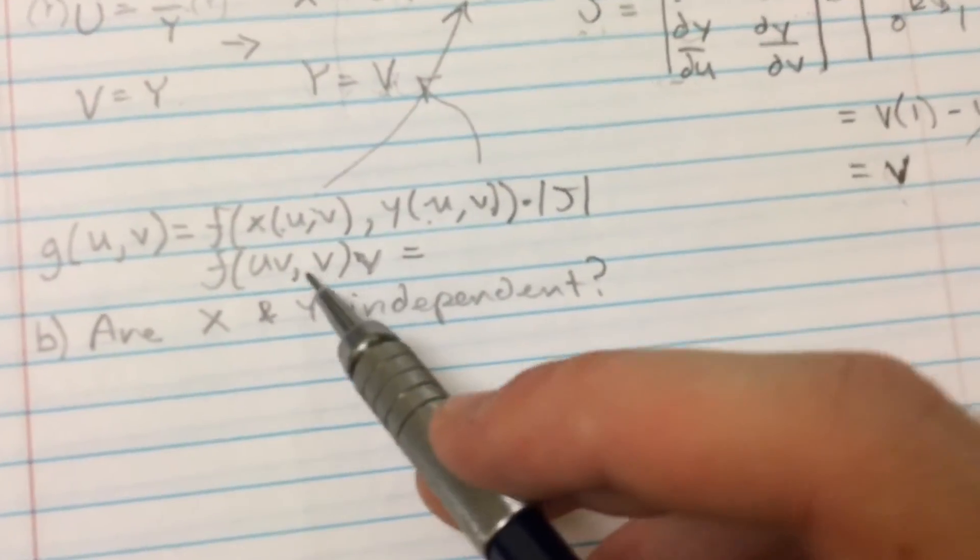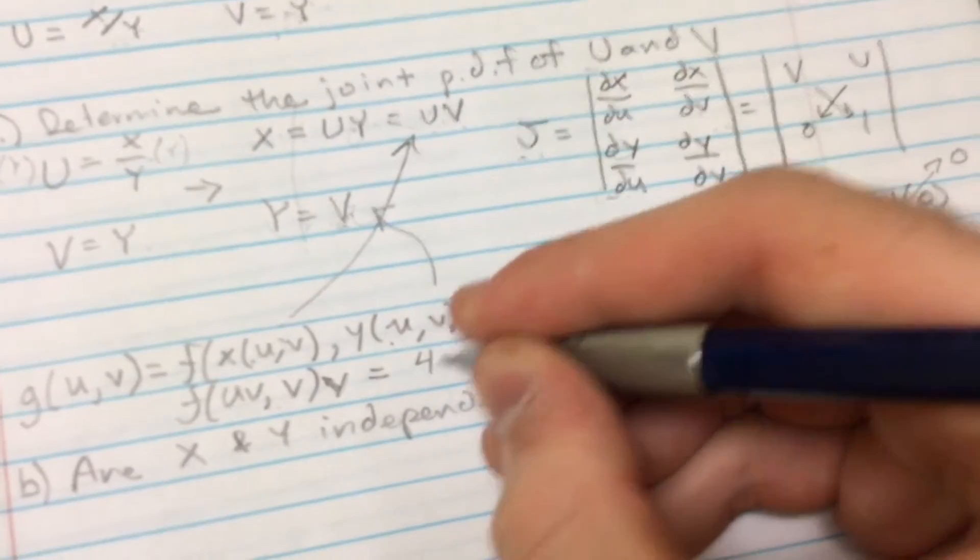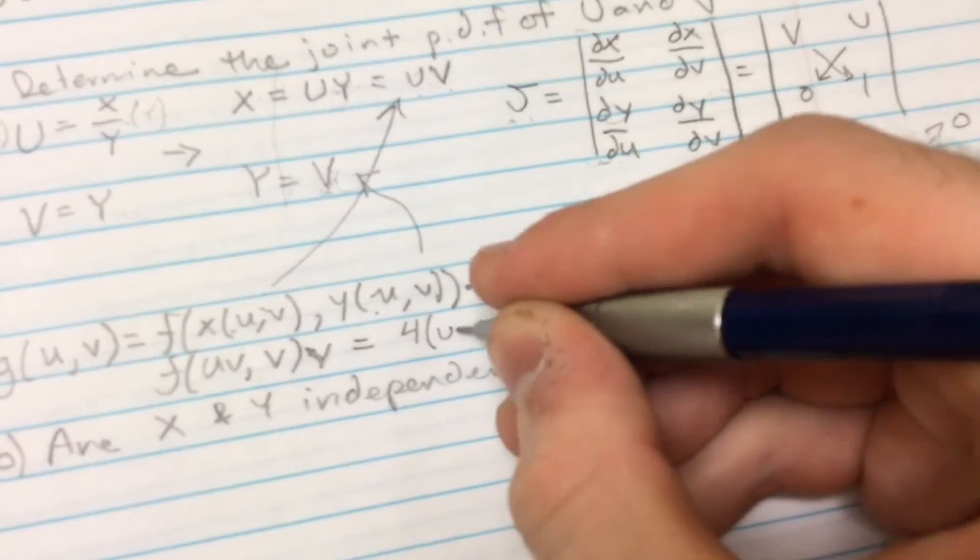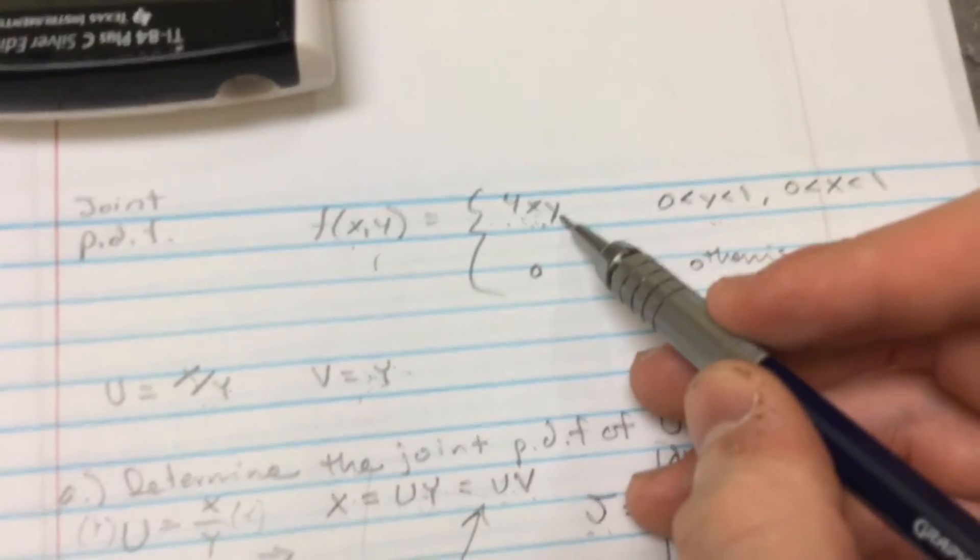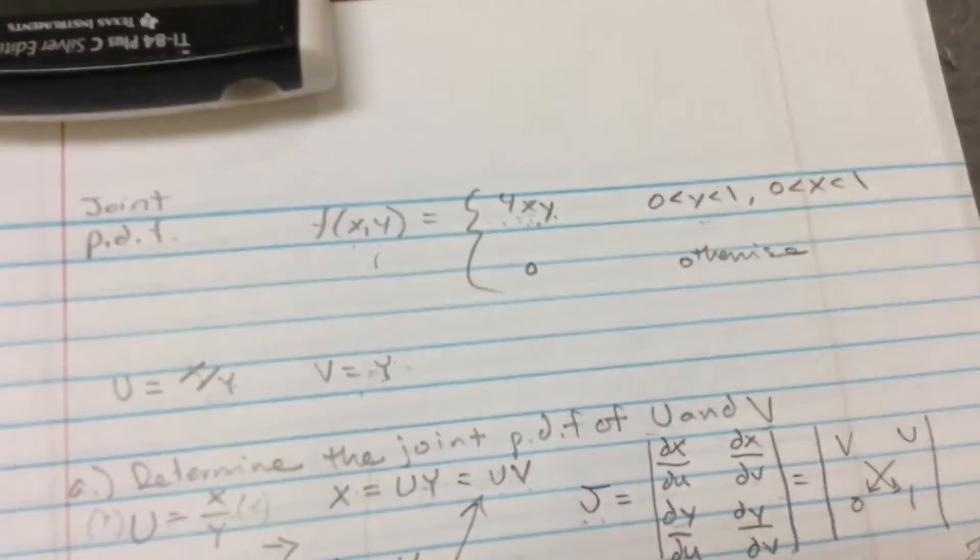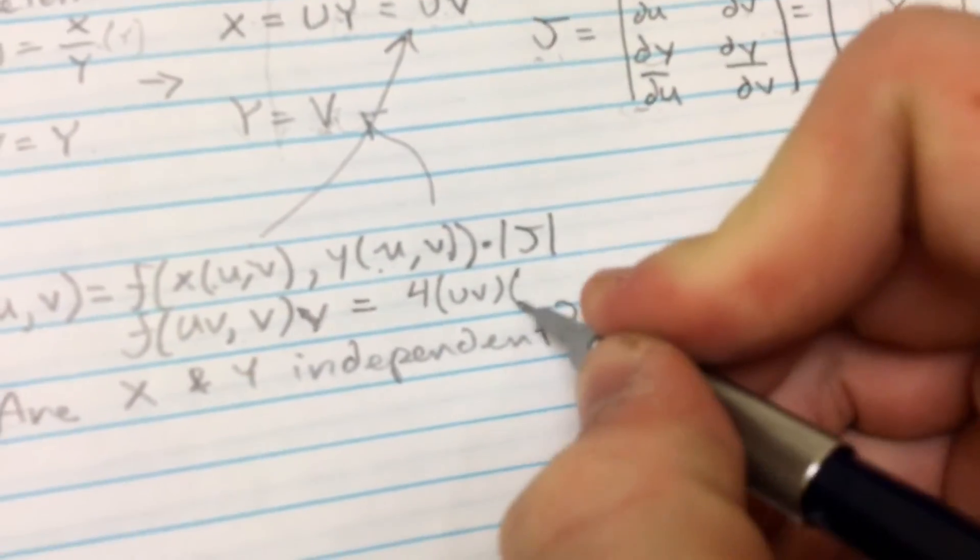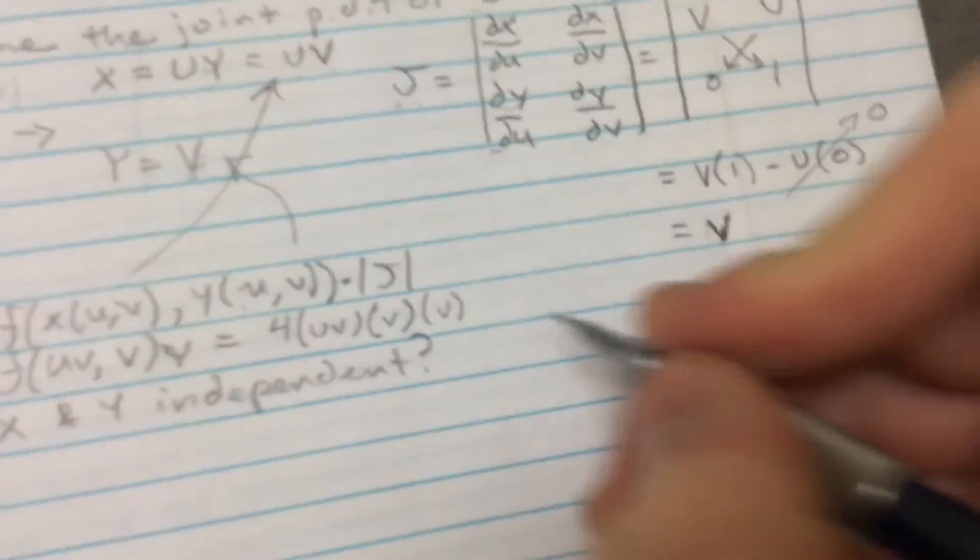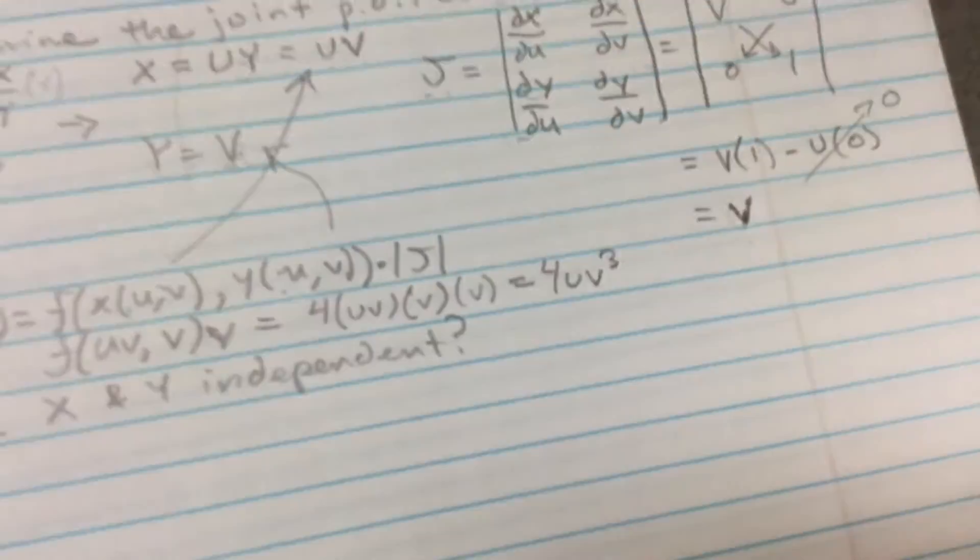V times V equals. So now what we can do is we can just plug this into up here because we have that. So all this is four times U V. So U V gets plugged into X and then we have V gets plugged into Y. So times V times V. So what does this equal? This equals four U V cubed. Okay.